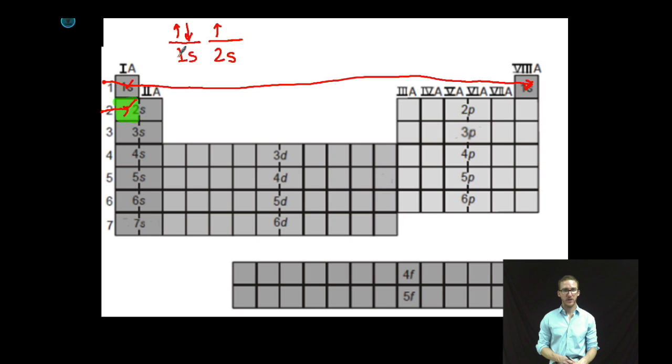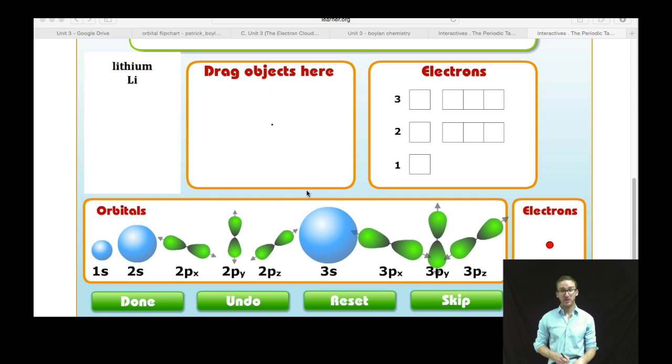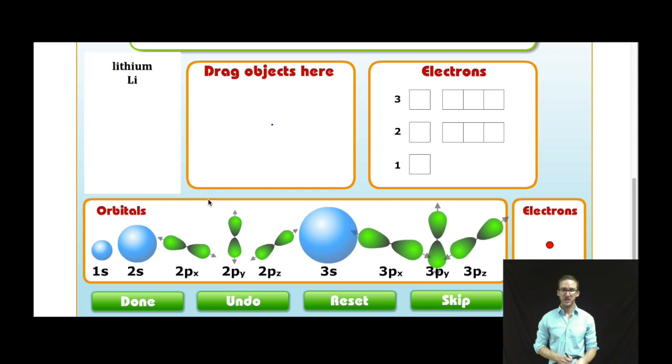This represents my electron configuration for lithium. Two of its electrons are in the first main energy level in an s-shaped sub-level. One of its electrons is in the second main energy level in an s-shaped orbital. How can we better visualize that? Let's take a look at this simulation.